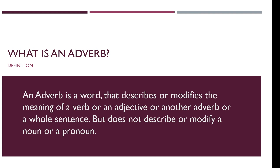So when we say adverb, it can describe a verb, an adjective, or a complete sentence. Now, one important difference to note: an adverb can also modify a preposition or a conjunction — but not a noun or pronoun. That is the key distinction.